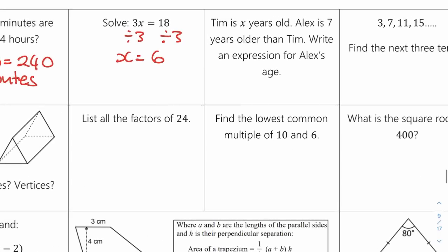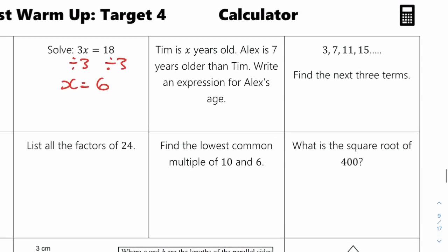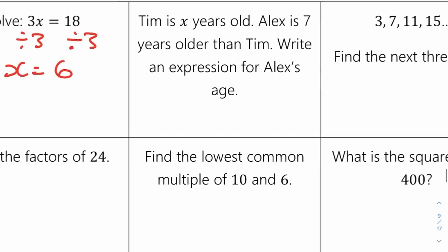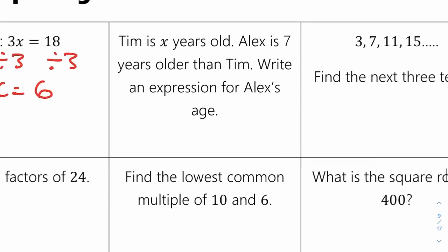Tim is x years old. Alex is 7 years older than Tim. Write an expression for Alex's age. So Tim is x, Alex is 7 years older, so it would be x plus 7.